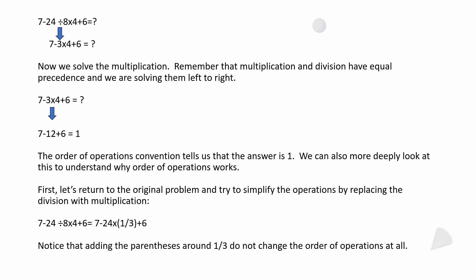If you go through the addition and subtraction, that equals 1. So the order of operations convention tells us that the answer is 1. Now we can more deeply look at this to try and understand why the order of operations works. A lot of times I'll hear people say, well gee, why did they make it up that way? Who decided that was the way to do it?